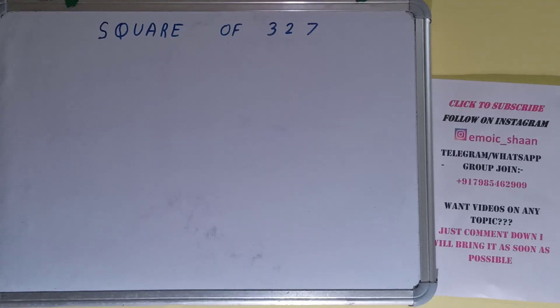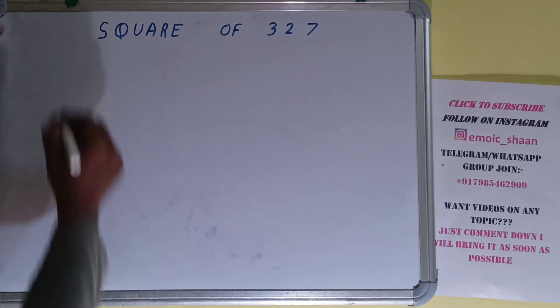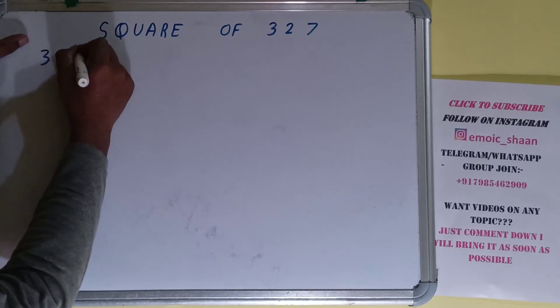Hello friends, and in this video I'll be helping you with the square of the number 327. So let's start. Before solving this, let me tell you square of 327 can also be written as 327 raised to the power 2.